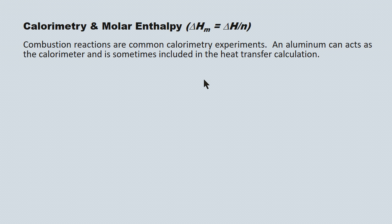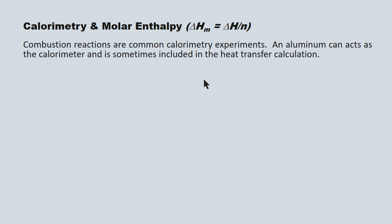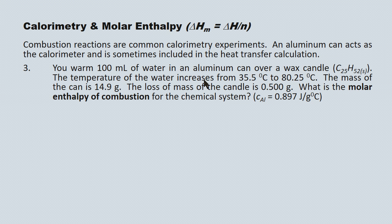Combustion reactions are also familiar in calorimetry work. However, we can't put a flame underneath the styrofoam cup, so we substitute an aluminum can for the calorimeter. Sometimes we have to do the heat transfer calculation not only into the water in the can, but also into the aluminum can itself — and sometimes not. Typically, if we see a specific heat capacity for aluminum and a mass value for the aluminum can in the question, they want you to do that piece as well. This is such a question.